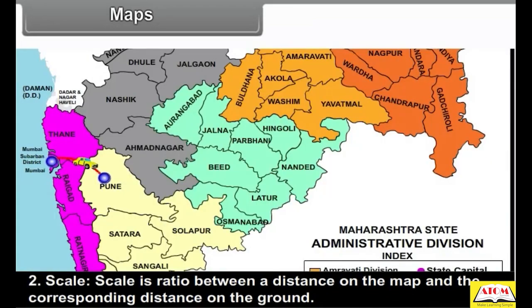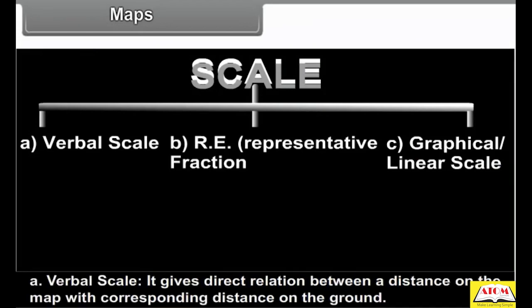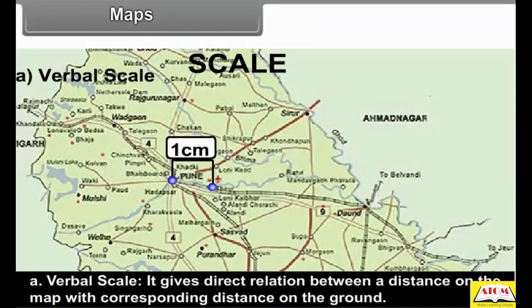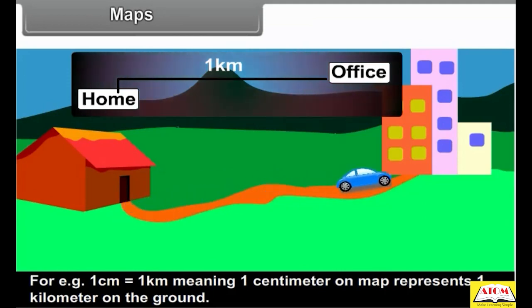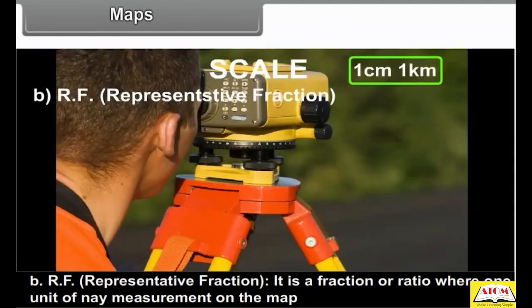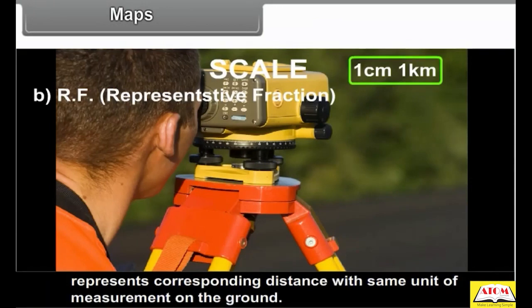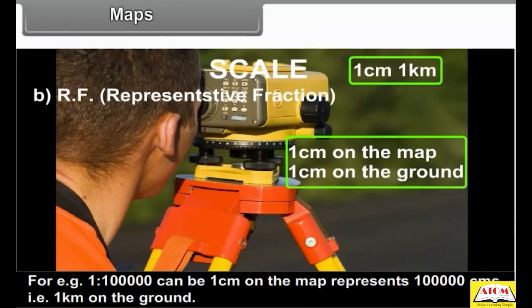Scale is a ratio between a distance on the map and the corresponding distance on the ground. There are three types of scales. A. Verbal scale: it gives a direct relation between a distance on the map and the corresponding distance on the ground. For example, 1 cm is equal to 1 km, meaning 1 cm on the map represents 1 km on the ground. B. Representative Fraction (RF): it is a fraction or ratio where one unit of any measurement on the map represents the corresponding distance with the same unit on the ground. For example, 1:1,00,000 means 1 cm on the map represents 1 lakh cm, i.e. 1 km on the ground.